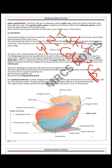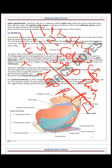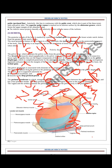After Colles' fascia, there is the superficial perineal pouch, then the deep perineal pouch. Separating them is the perineal membrane. Then there is the superficial layer of the urogenital diaphragm, then the urogenital diaphragm itself, then the endopelvic fascia, and later the peritoneum.